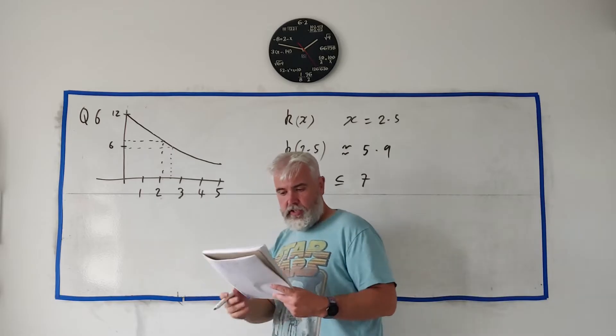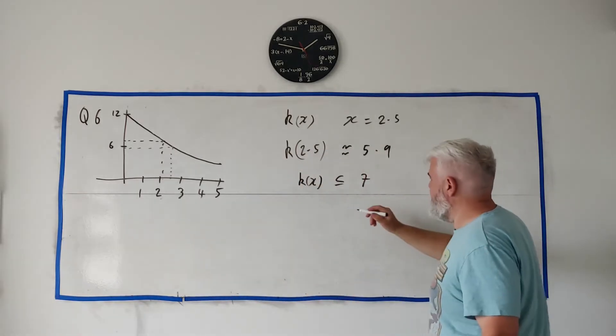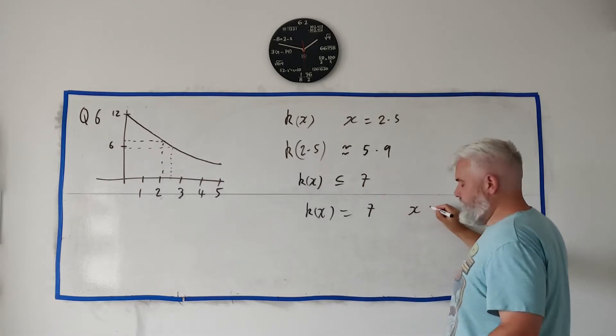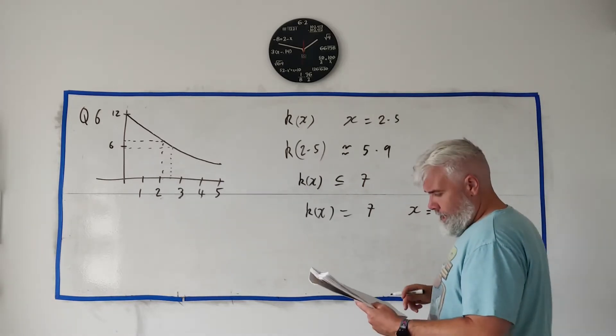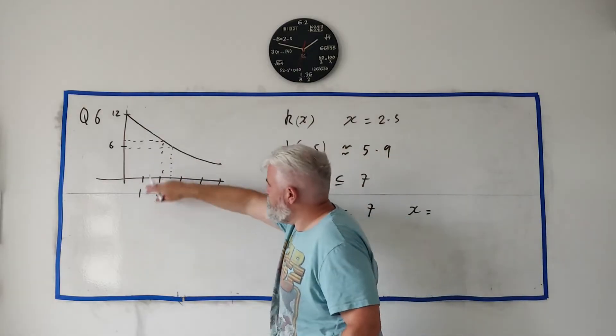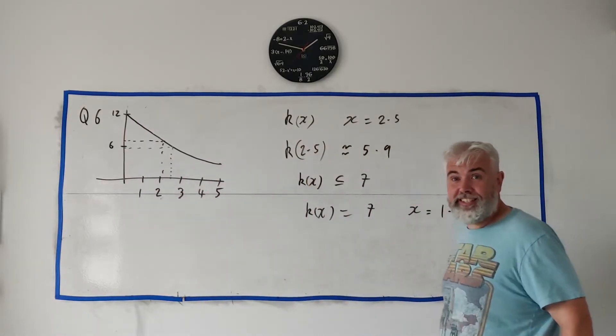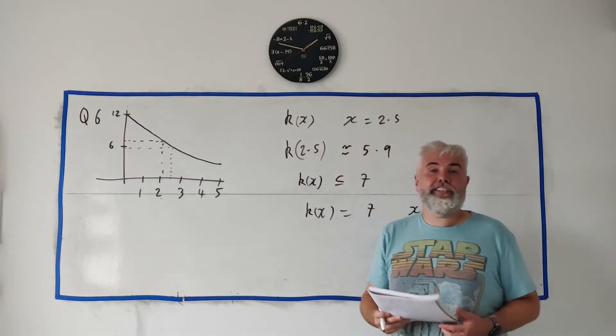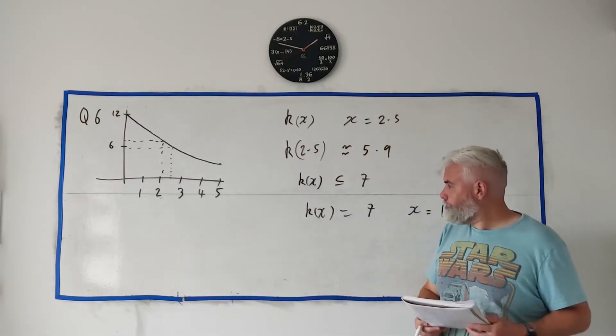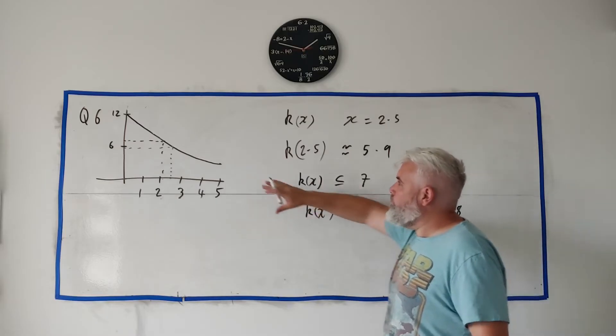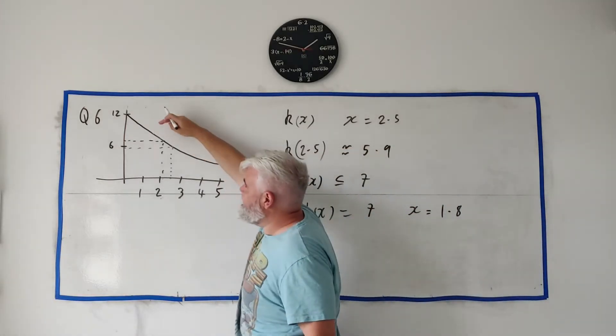Well the first thing I would do is find out when is k(x) equal to seven, or roughly. I go to seven, come across here and get a guess at an answer. My guess is k(x) equals seven when x equals 1.8. So my drawing, forget about my drawing, 1.8 is what I said when I looked at the real drawing.